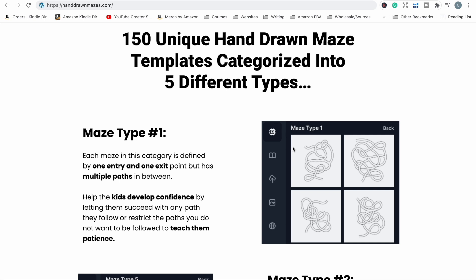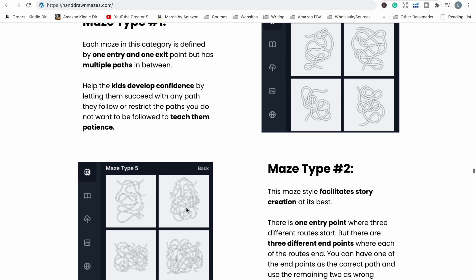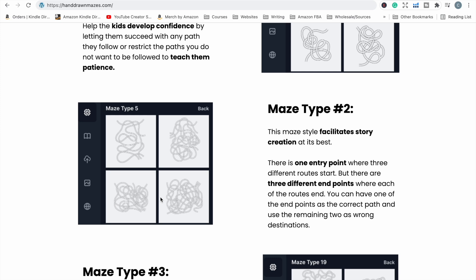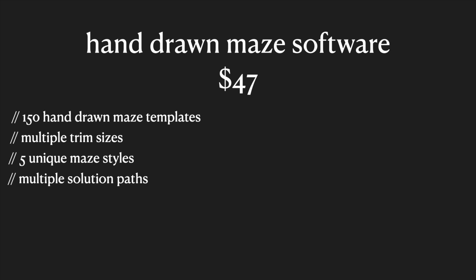So when you are on the website like this, the first version of their software that you get offered is the hand-drawn maze software. The cost of this version is going to be $47 — that is the discounted price. In this version, you will get access to 150 of the premium maze templates. You have the choice of multiple trim sizes or multiple book sizes, so that's whether you want your book an 8.5 by 11 or a 6 by 9 or something else. You get access to five unique maze styles.